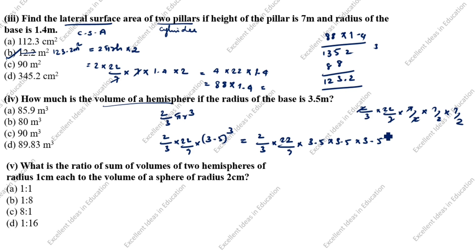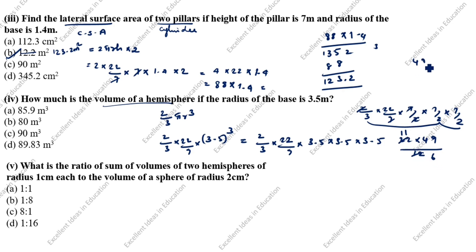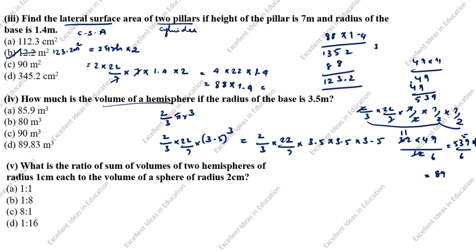The 7s cancel and the 2s cancel. So we get 22 × 49 divided by 6. 49 × 11 = 539. 539 divided by 6 = 89.83 cubic meters. So D is the answer.